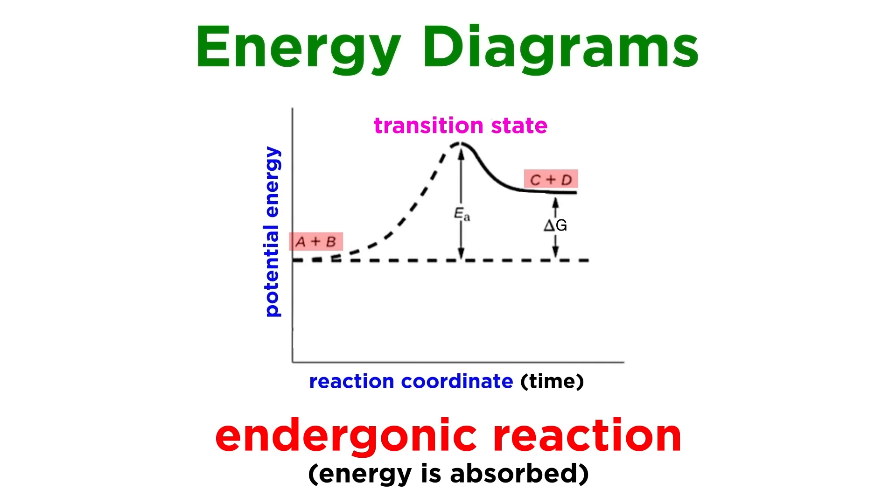Now let's look at an endergonic reaction. Again, we see reactants, products, the transition state, and the activation energy. The only difference is that now products sit higher than reactants, meaning energy must be absorbed for the reaction to occur, so we can call this delta G.